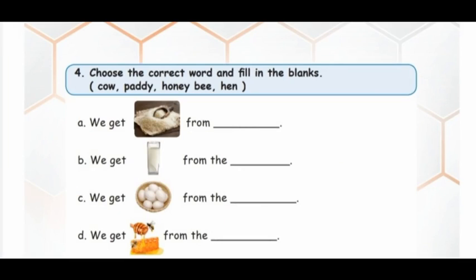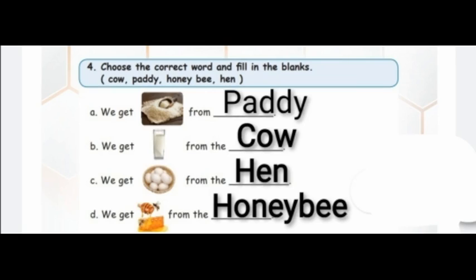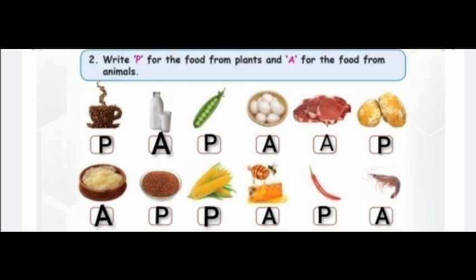Question number 2: choose the correct word and fill in the blanks. Options are cow, paddy, honeybee, hen. We get rice from paddy. We get milk from the cow. We get eggs from the hen. We get honey from the honeybee.